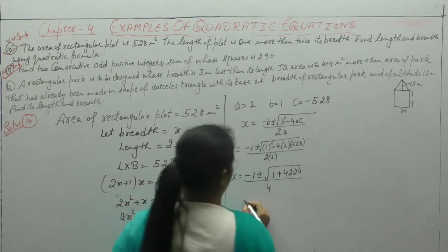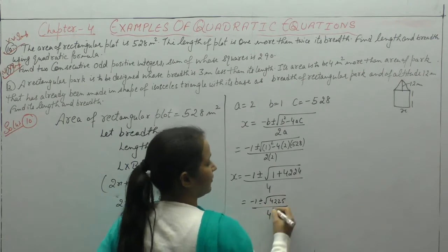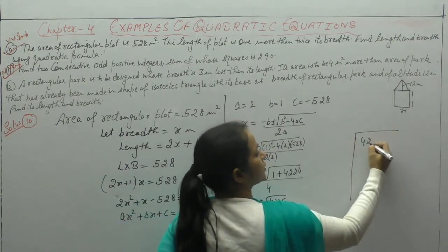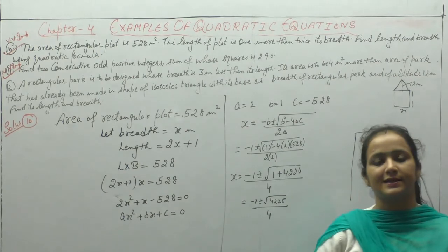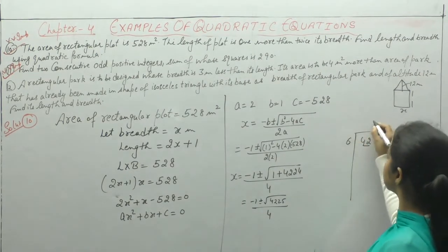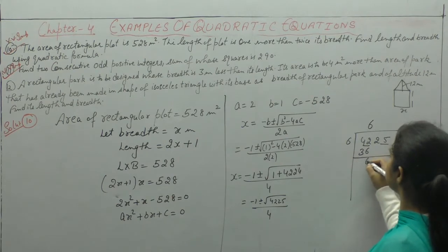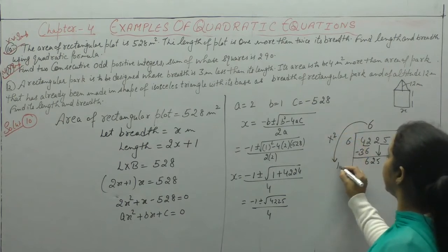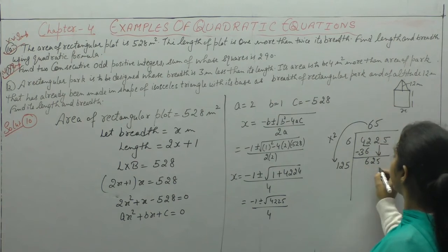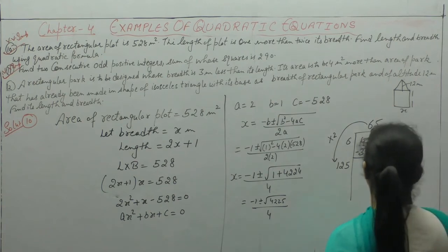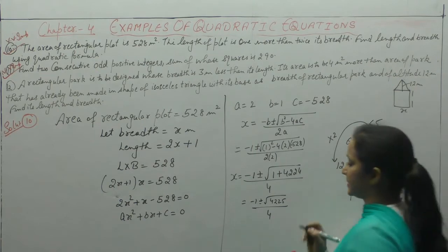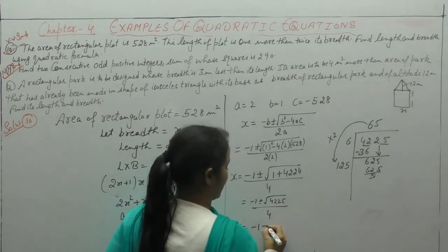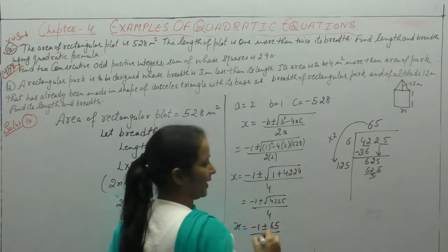Adding 1 + 4224 = 4225. Now finding the square root of 4225: making pairs of 2 from behind — 6, 6 are 36; 12 minus 6; bring down next digits; multiply by 2; 65 × 5 = 325; checking — square root comes out to 65. So x = (−1 ± 65) / 4.